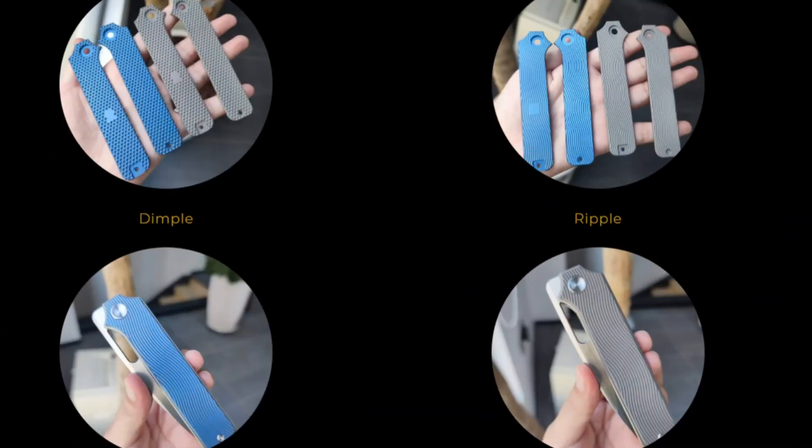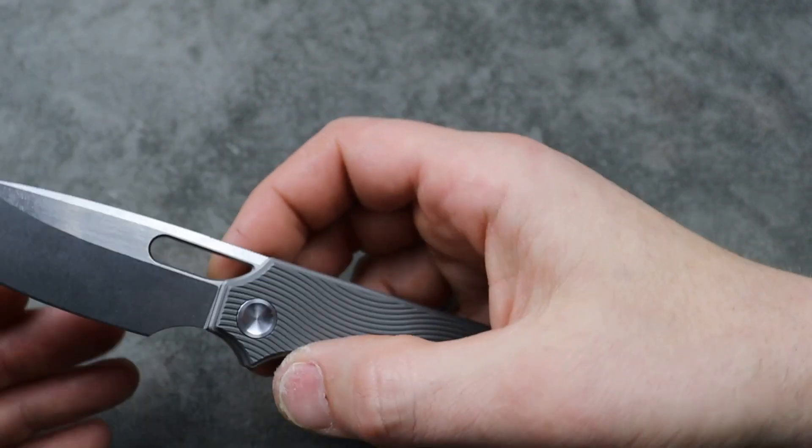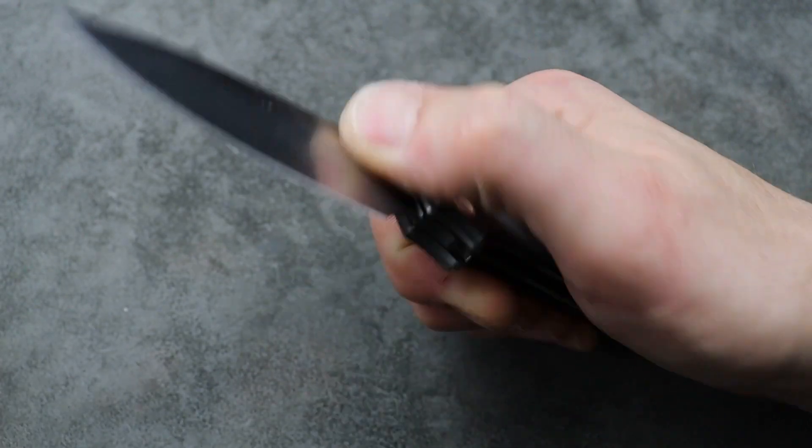Overlays will be available separately as well as during the pre-order and all configurations for those who want more options. See the website for more details. That's awesome. I like that you'll be able to maybe buy an extra pair of scales so you could swap them out, kind of change the look of your knife. I love that.